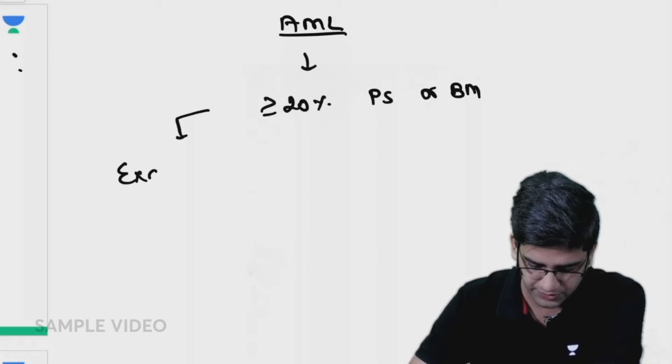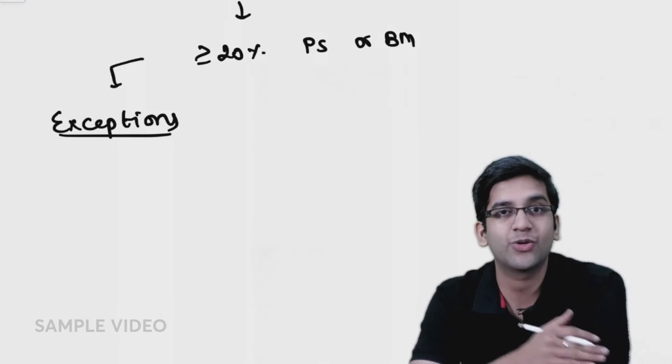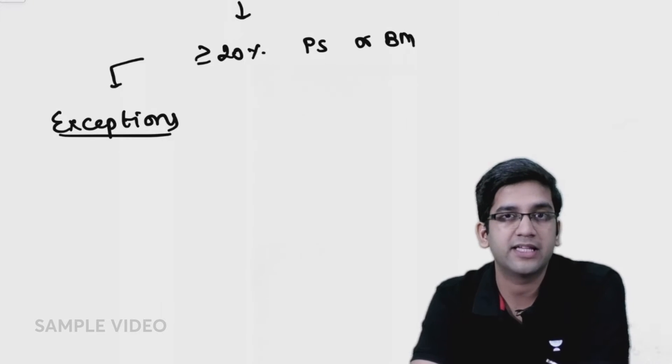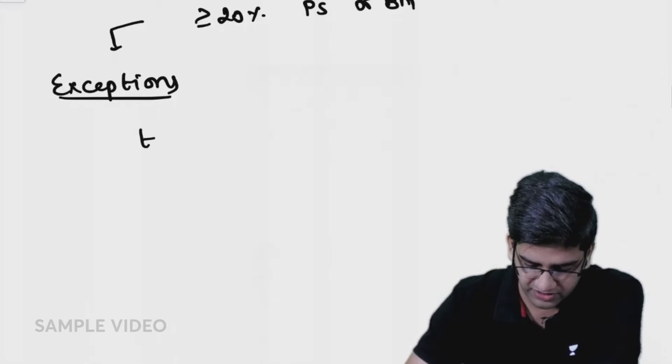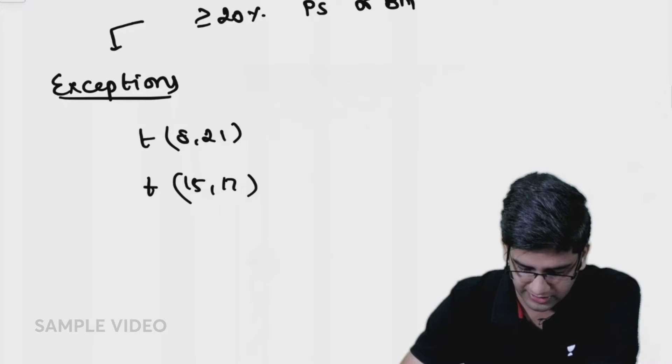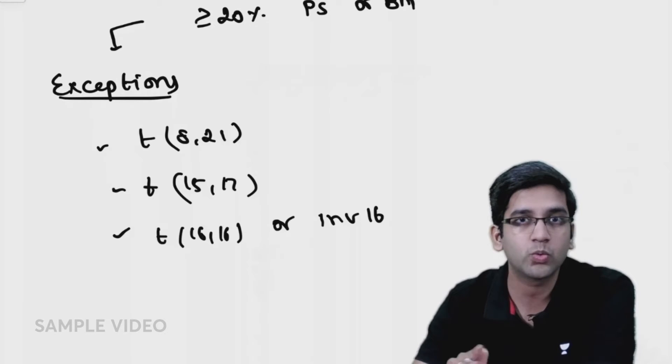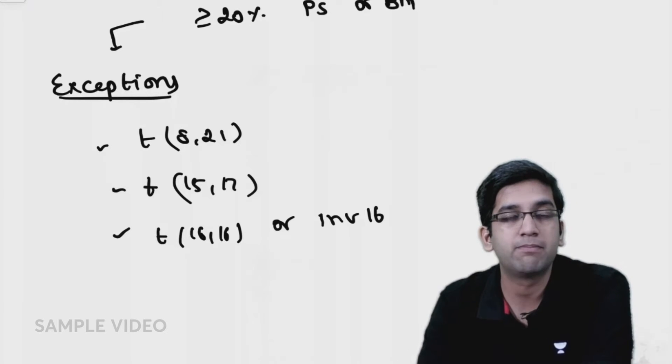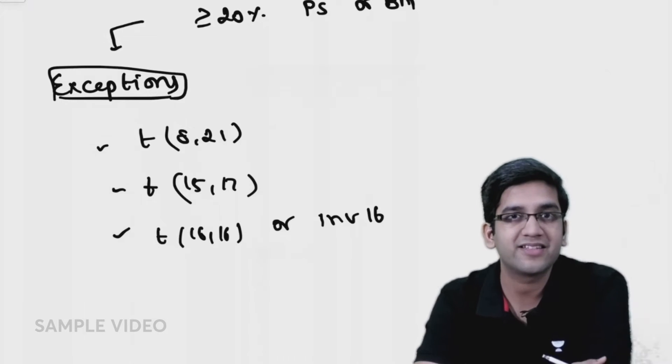But there's a slight twist - this blast percentage has a few exceptions. Exceptions are always MCQs. I don't require 20% blasts in a few situations when I have classical translocations, for example translocation (8;21), translocation (15;17), translocation (16;16) or inversion 16. When I have any of these three, the blast percentage is not required.